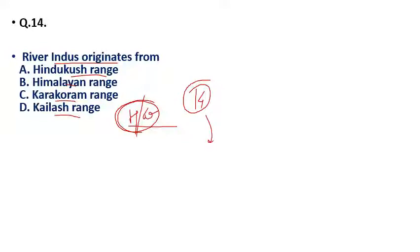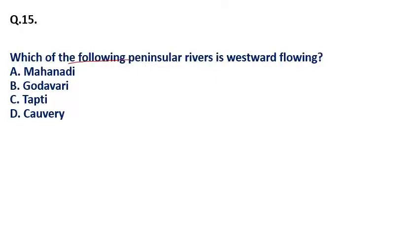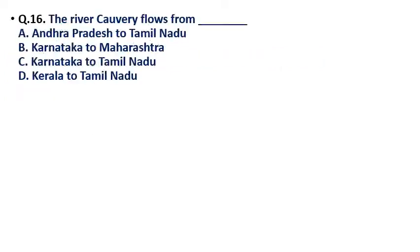Question 15: Which of the following peninsular rivers flows westward — (a) Mahanadi, (b) Godavari, (c) Tapti, (d) Kaveri? The correct answer is Tapti. In peninsular India, the westward-flowing rivers are both Narmada and Tapti. You have to remember both rivers — if either Narmada or Tapti appears in the options, both are correct answers.